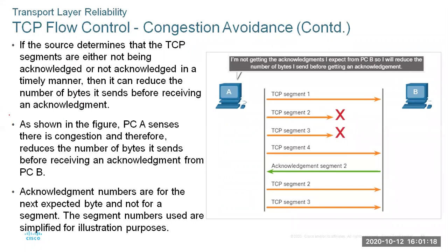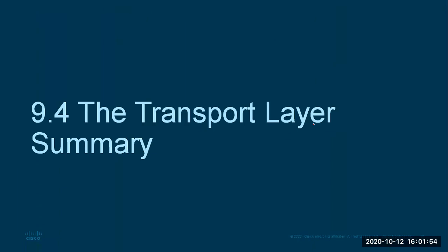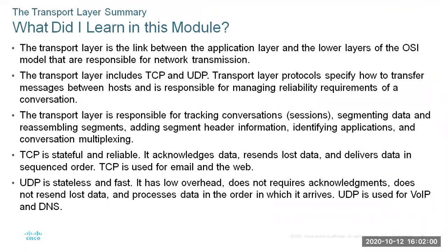As you can see here, PC A senses that there is congestion and therefore reduces the number of bytes it is sending before it receives an acknowledgement from B. The acknowledgement numbers are for the next expected byte and not for the segment. Segment numbers are simplified for illustration purposes. That is the end of the transport layer.